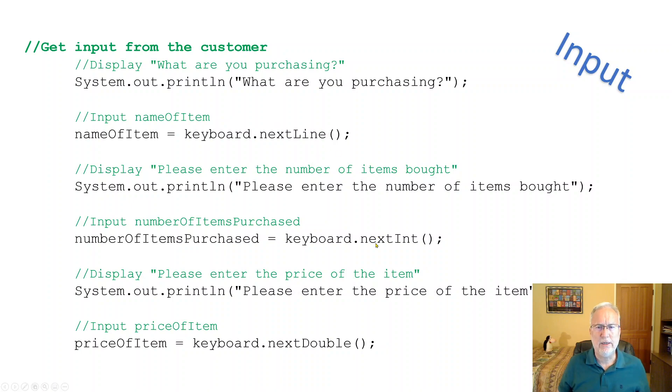So nextLine gets a string. nextInt gets an integer. nextDouble gets a double. So these are things, how to do things. But once you know what to do, looking up how to do it is pretty simple.